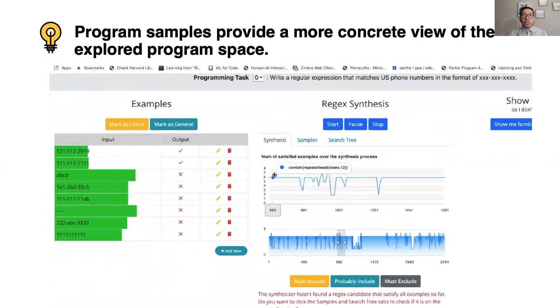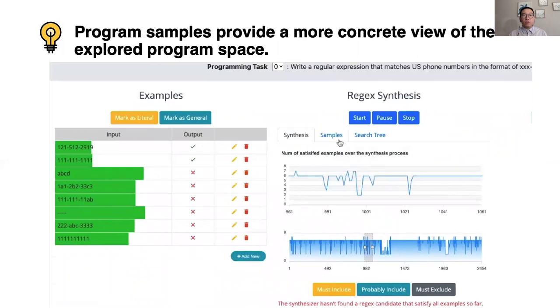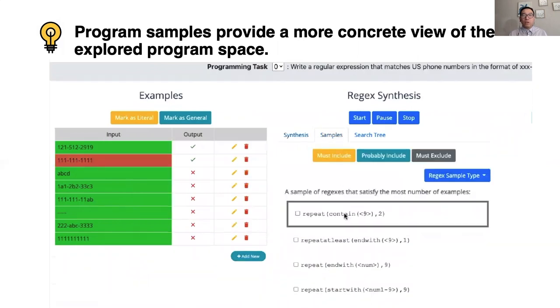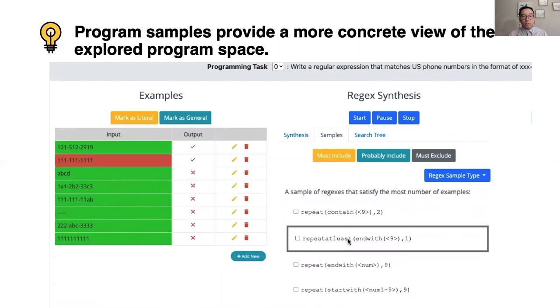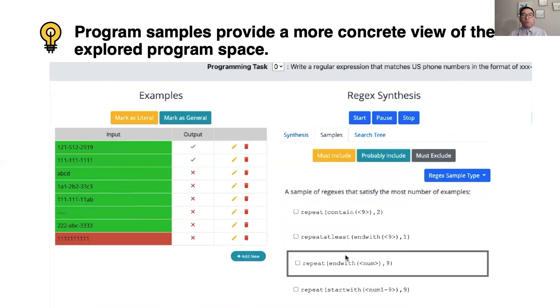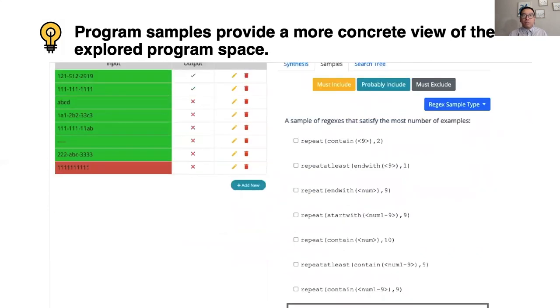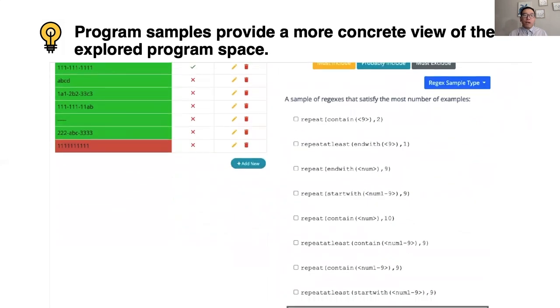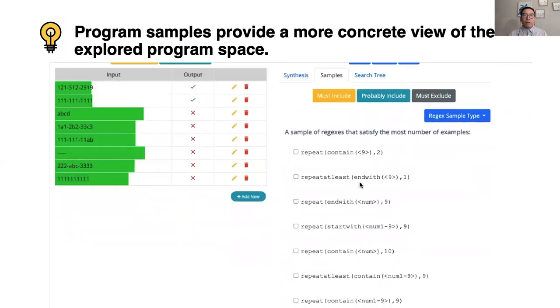After each synthesis iteration, you can use different sampling strategies to inspect concrete program candidates from the explored program space. If you hover the mouse over a program candidate, the input-output examples will be highlighted in different colors. Green means the example is satisfied by the program, and red means it's not satisfied by the program.